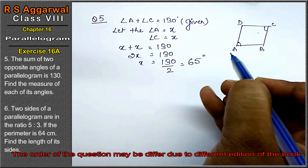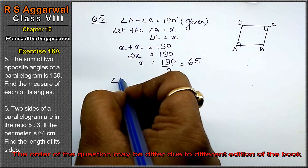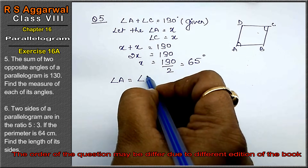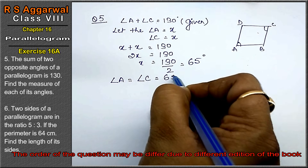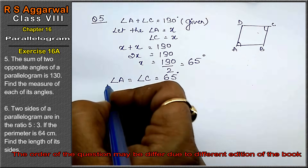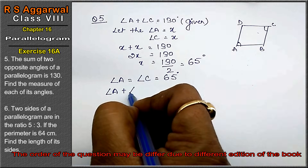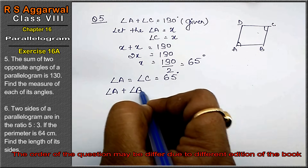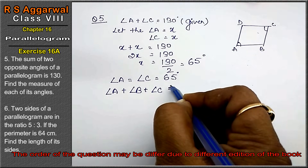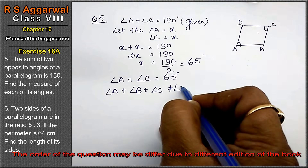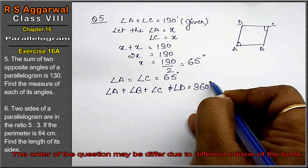So angle A equals 65 degrees and angle C equals 65 degrees. Now we know that angle A plus angle B plus angle C plus angle D equals 360 degrees.